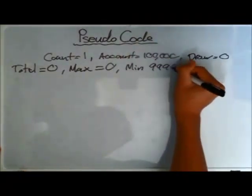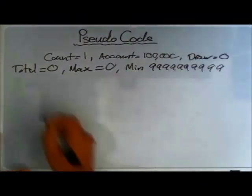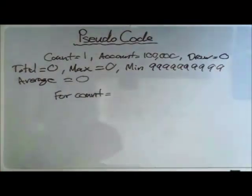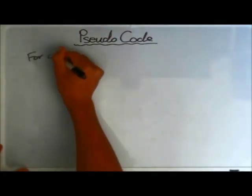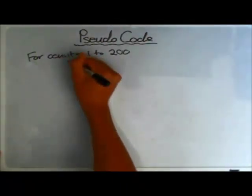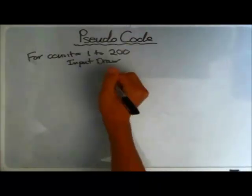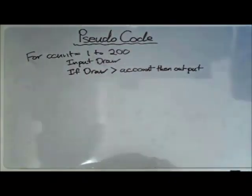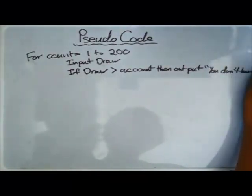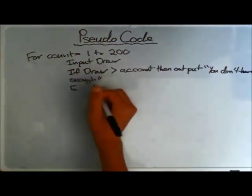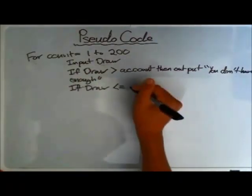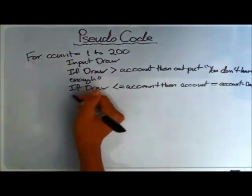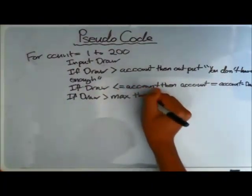Now we're setting our variables. The first answer uses FOR TO NEXT. For account equals one to two hundred, since there are two hundred people. Input draw — the user inputs how much money they want to draw. If the draw is greater than their account, the code outputs a message that they do not have enough money. If the draw is equal to or less than their account balance, it is subtracted: account equals account minus draw.